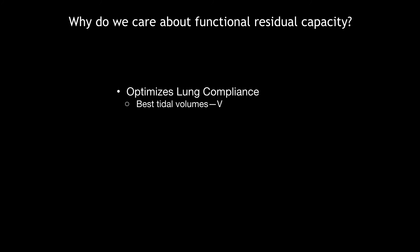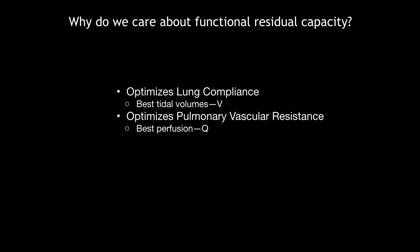Why do we care about functional residual capacity? At optimal FRC, you have optimal lung compliance — the best tidal volumes, the best V. You also have optimal pulmonary vascular resistance, which means the best perfusion, the best Q. So if you achieve the perfect functional residual capacity, you have optimal VQ, which gives you the best oxygenation and ventilation. This occurs in all of us naturally at normal tidal volume. But when we're sick, that optimal FRC goes away — either too much FRC, which is obstructive disease, or too little, which is restrictive disease. This is an important concept when thinking about how we treat respiratory diseases with mechanical ventilation.